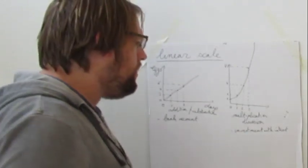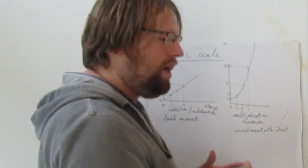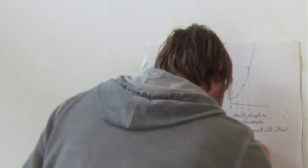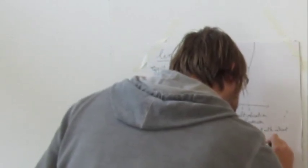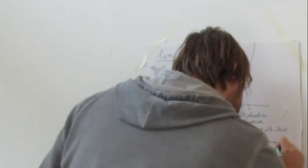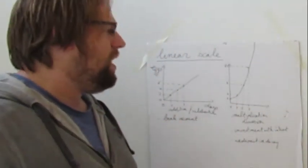But also, for instance, radioactive decay when you halve the content of your radioactive material in a certain amount of time. So the key point is that everything is multiplied in a certain time step. This is an exponential growth.